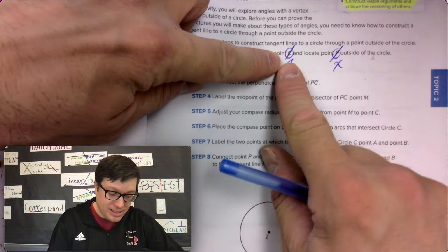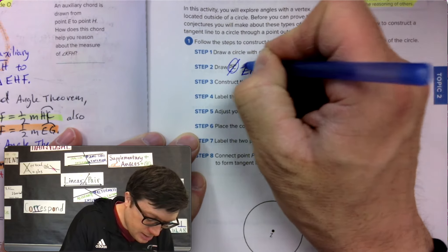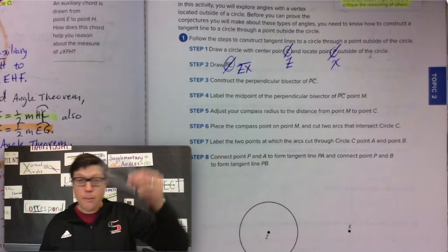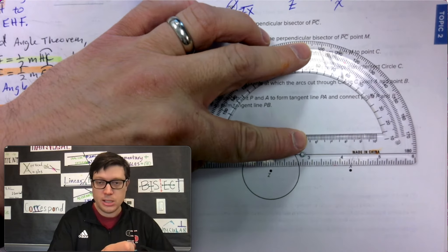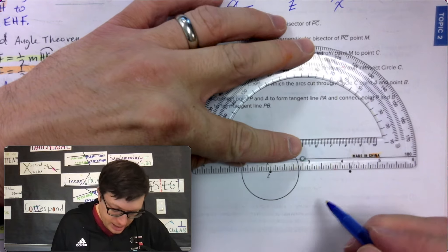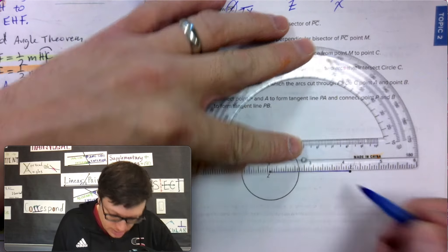So when it says draw PC, we're actually drawing ZX. So that's where the protractor comes into place. Okay, so only draw the segment though. We're not drawing anything more, only draw the segments. So here it is, Z to X, draw your segments. Okay.